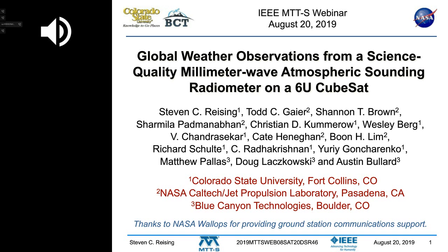Our partners at Jet Propulsion Laboratory (JPL) in Pasadena produced the instrument and supported instrument integration and testing with the spacecraft, and continue to work with us to this day. Blue Canyon Technologies has provided the spacecraft — they're in Boulder, Colorado, doing mission operations. NASA Wallops is providing ground station communication support. We thank everyone involved in the project.